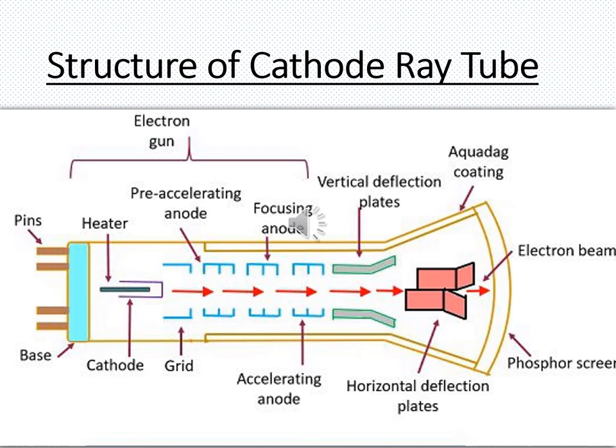Once the electron beams reach the deflection plates assembly, there are vertical deflection plates and horizontal deflection plates. The vertical deflection plates deflect the electron beams in the vertical direction, that is the y direction. The horizontal deflection plates deflect the electron beams in the horizontal direction, or x direction.